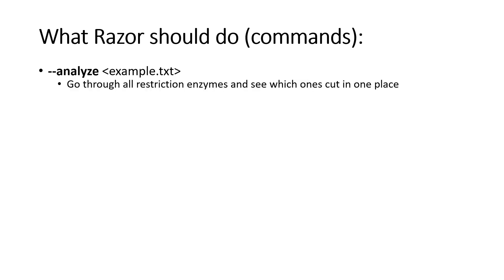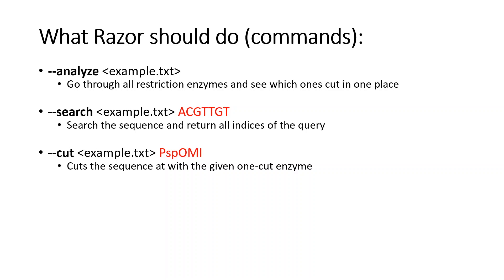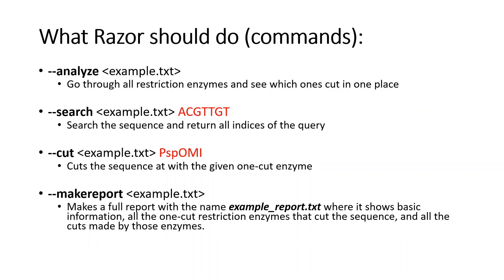RASR is going to be able to analyze a file. It'll take a text file in that has just the nucleotides of the top strand of DNA, five prime to three prime, and it'll tell you which enzymes are one-cut enzymes — which enzymes only cut the DNA in one place. Search is going to take that same file and we can search for a sequence like A-C-G-T-T-G-T and it'll tell us all the locations where that occurs in the DNA. Cut is going to take in that DNA sequence file and we can give it a certain restriction enzyme, in this case PSP-O-M-I, and that restriction enzyme will actually cut the DNA in one place and show us the cut that is made. Make report will take that text file, go through all the restriction enzymes in the program, find out which ones only cut it in one place, list them, and then also list and show all the cuts so that the user can make a decision on which restriction enzyme they want to use.